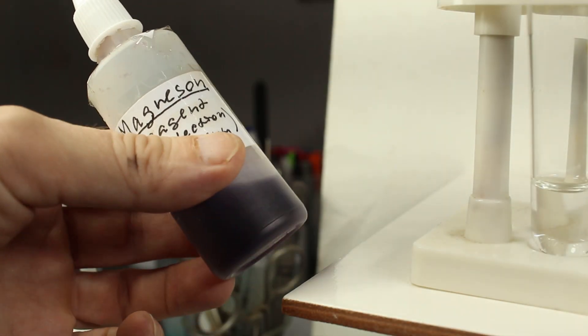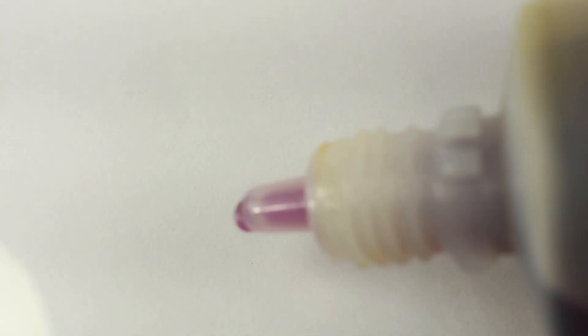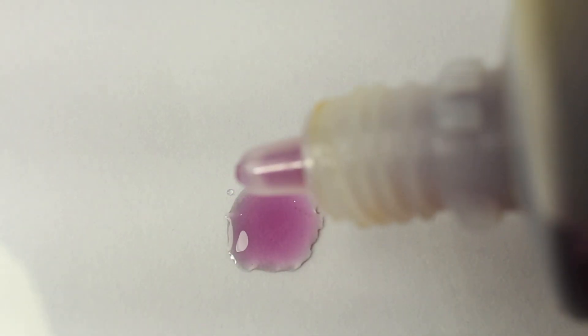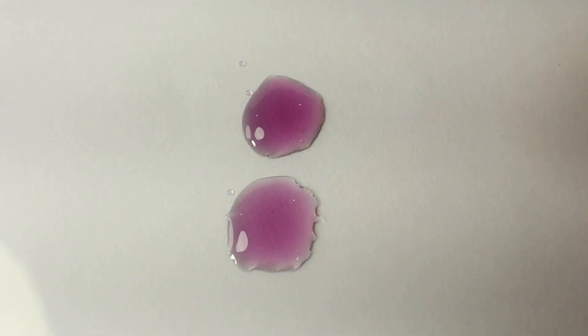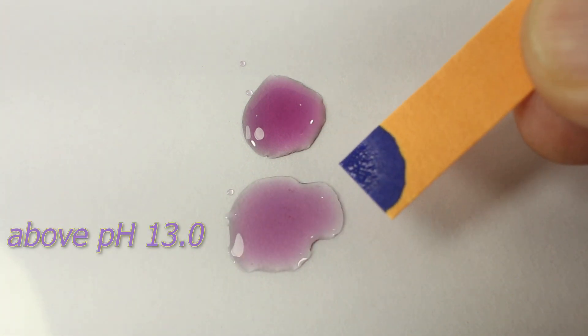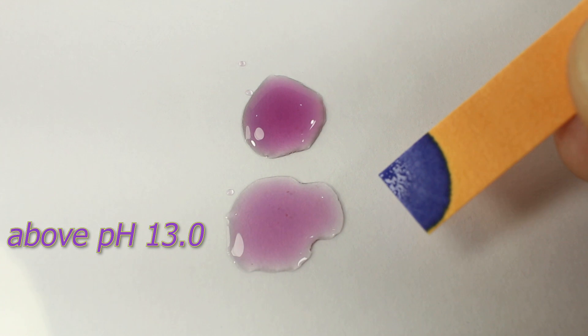It lives true to its name, it's really violet. And it's normally sold in a condition when it's very alkaline, pH is above 13. I can check the pH with pH paper, you see it's really 14 or so.